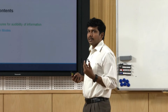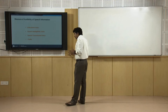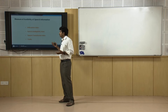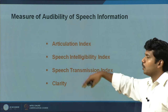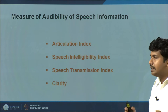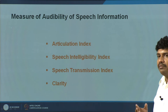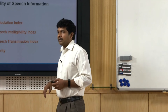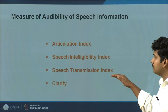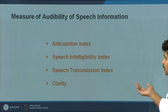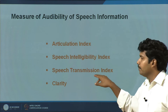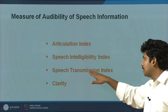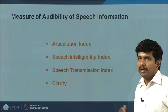We will talk about an important factor called room modes. Audibility of a particular speech or music depends primarily on three parameters that are more or less related. The representation is also similar but varies considerably from one another. These are: first, the articulation index; second, speech intelligibility index; third, speech transmission index. There is also a version called RASTI — rapid articulation speech transmission index. Then there is an indicator called clarity.